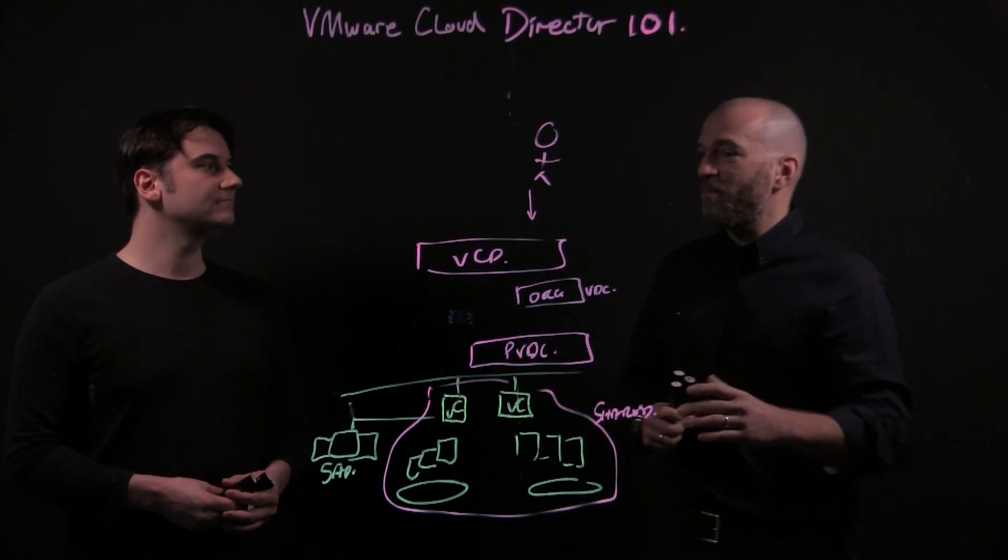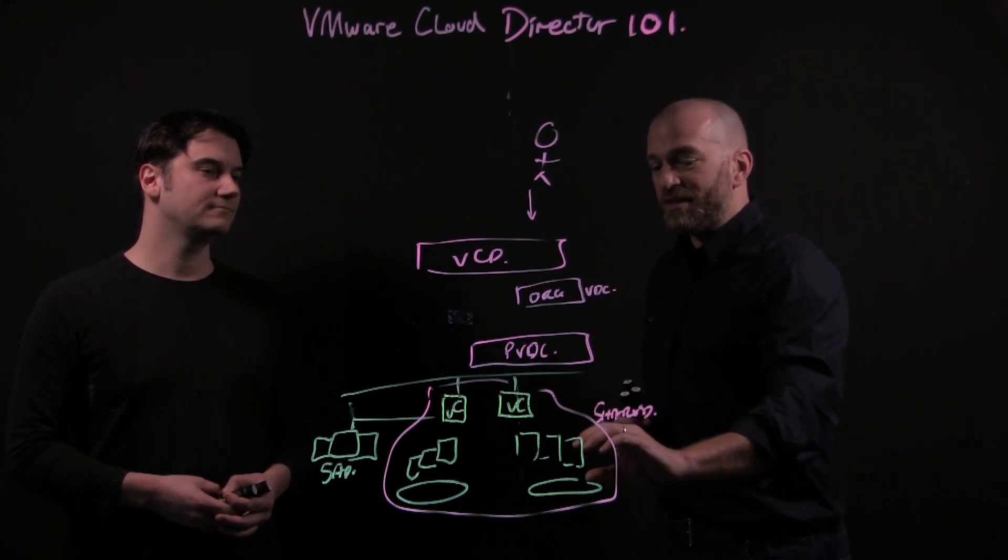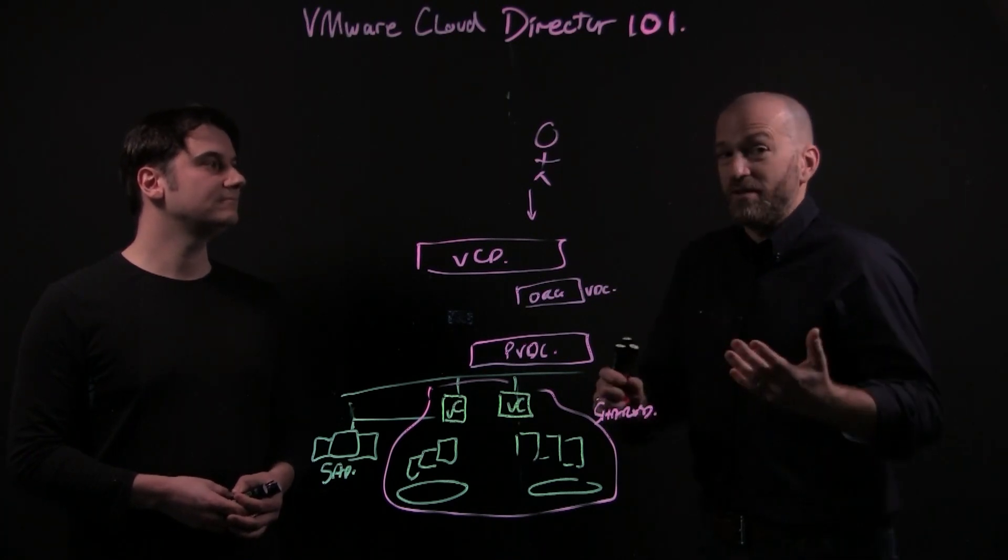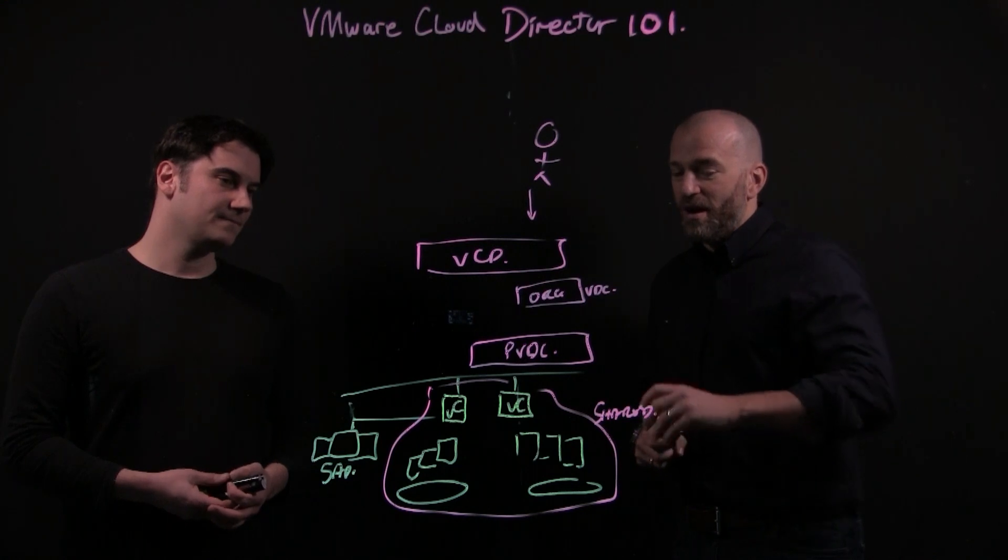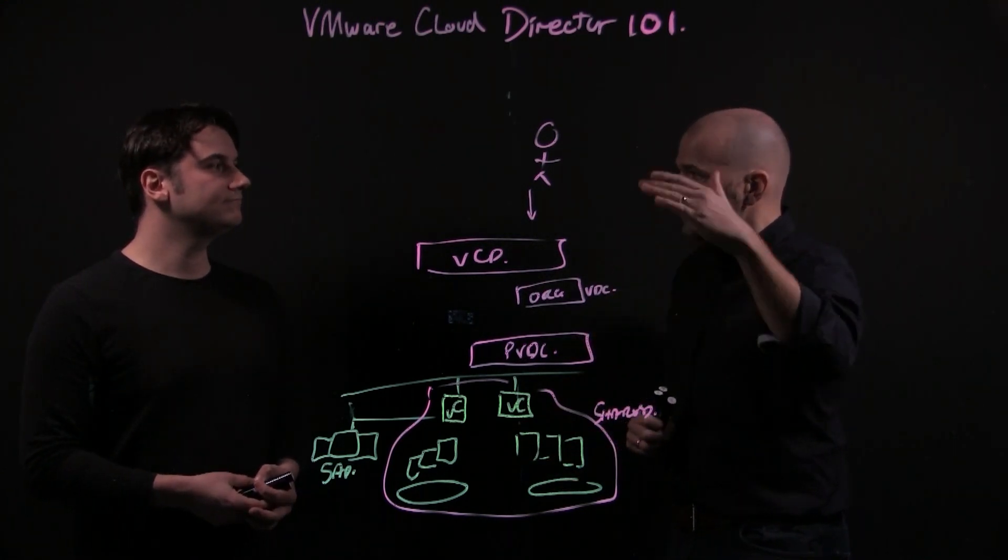Now we're going to dive into more about the actual abstraction itself in terms of the resources that are pooled, how they're pooled up, and how they're then offered out to tenants and subscribers. Can you step us through how this works in terms of the resource pools mapped to virtual data centers and then the allocation models?